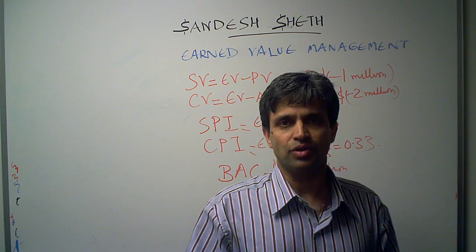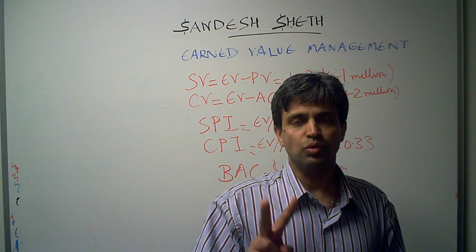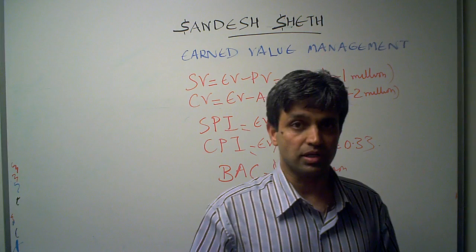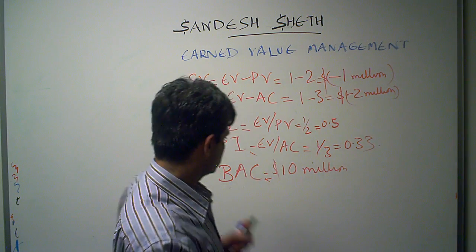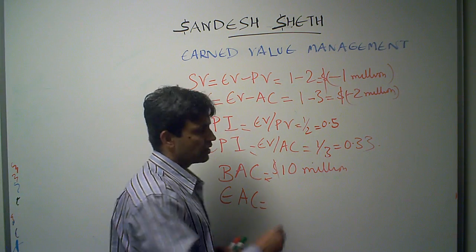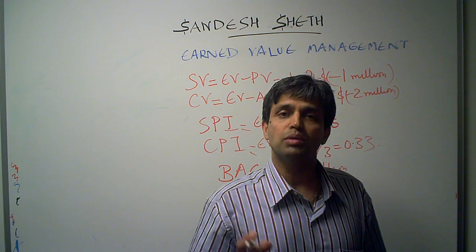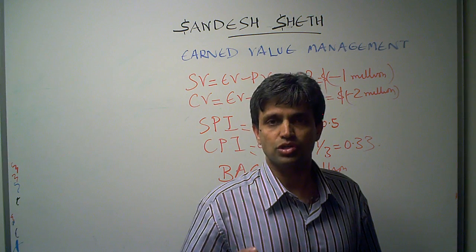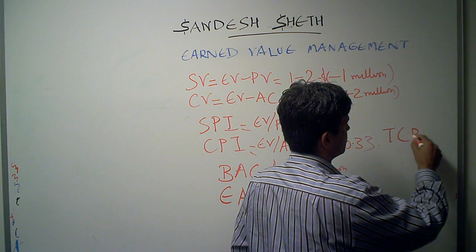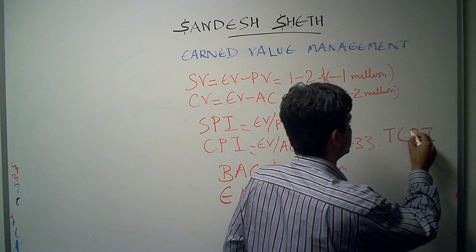In this presentation on EVM, I will explain two terms. The first is Estimate at Completion, EAC. And the second term is TCPI — To Complete Cost Performance Indicator.